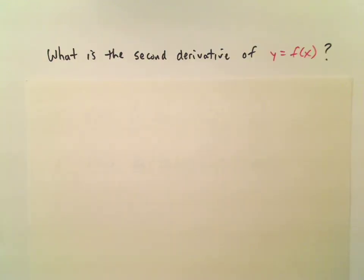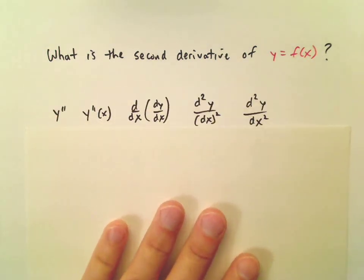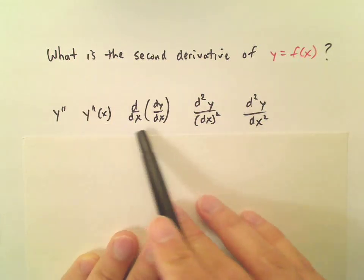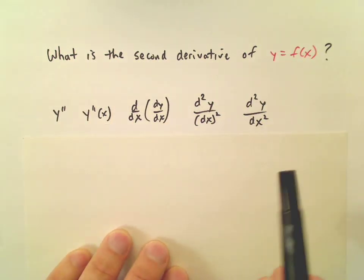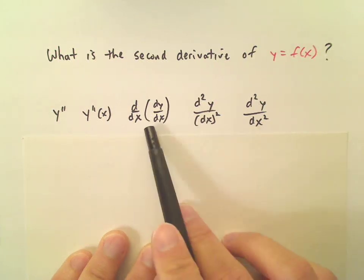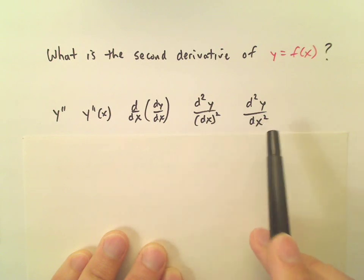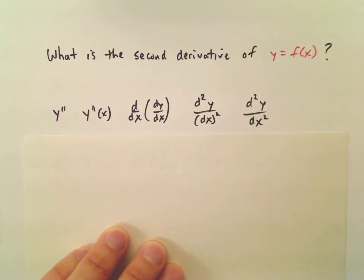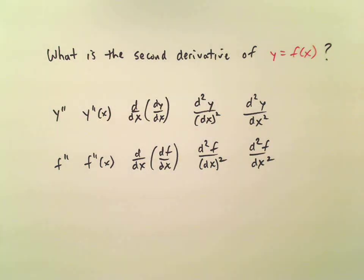Another question is, what is the second derivative of y equals f of x? The second derivative is simply what you get when you take the derivative of the derivative. Take the derivative twice. Here are some expressions for it: y double prime, y double prime x, and then all of this stuff. You probably won't see either of these two very often, but I included those just to show you where it is that this comes from. You definitely will see this, d squared y over dx squared. Just as before, y equals f, so there you have it.